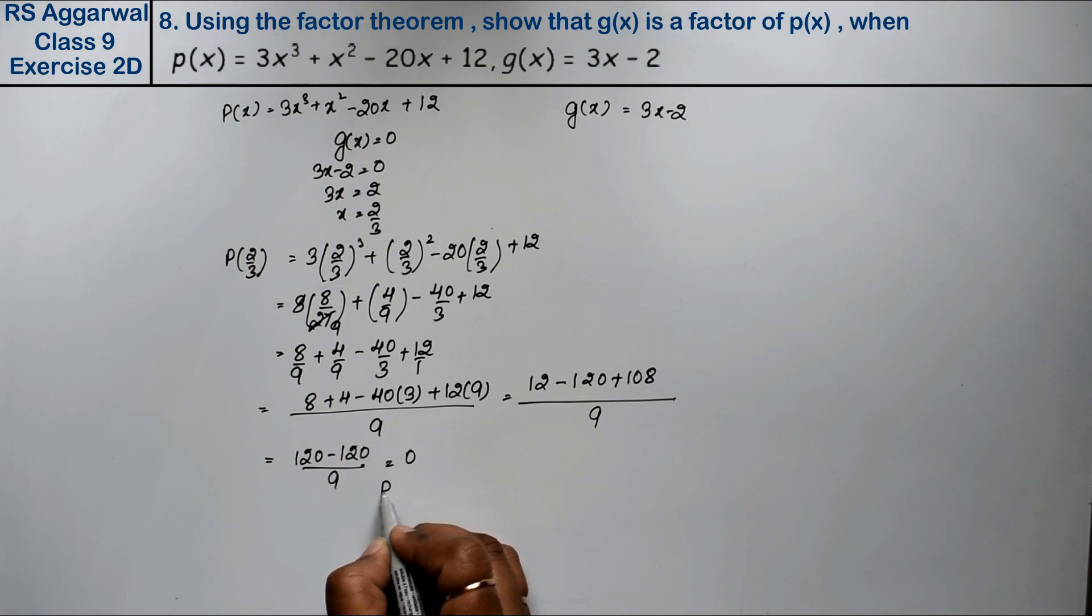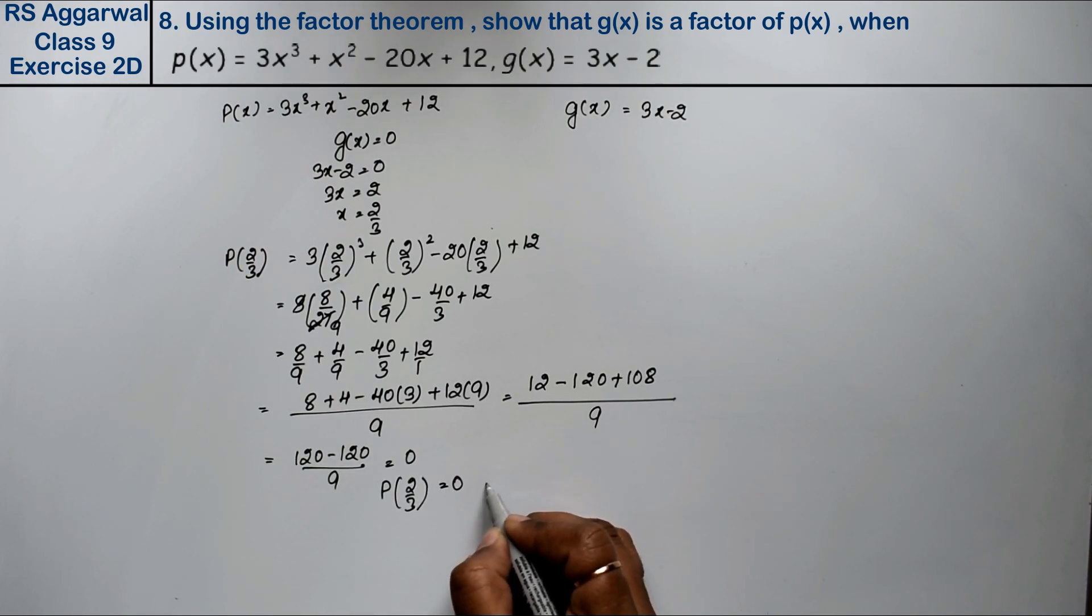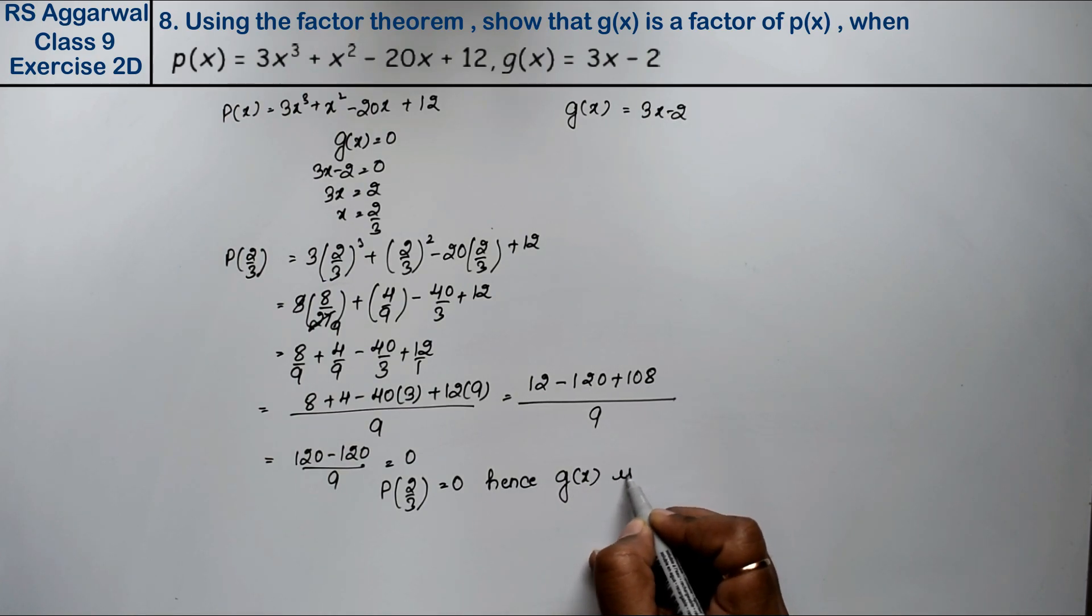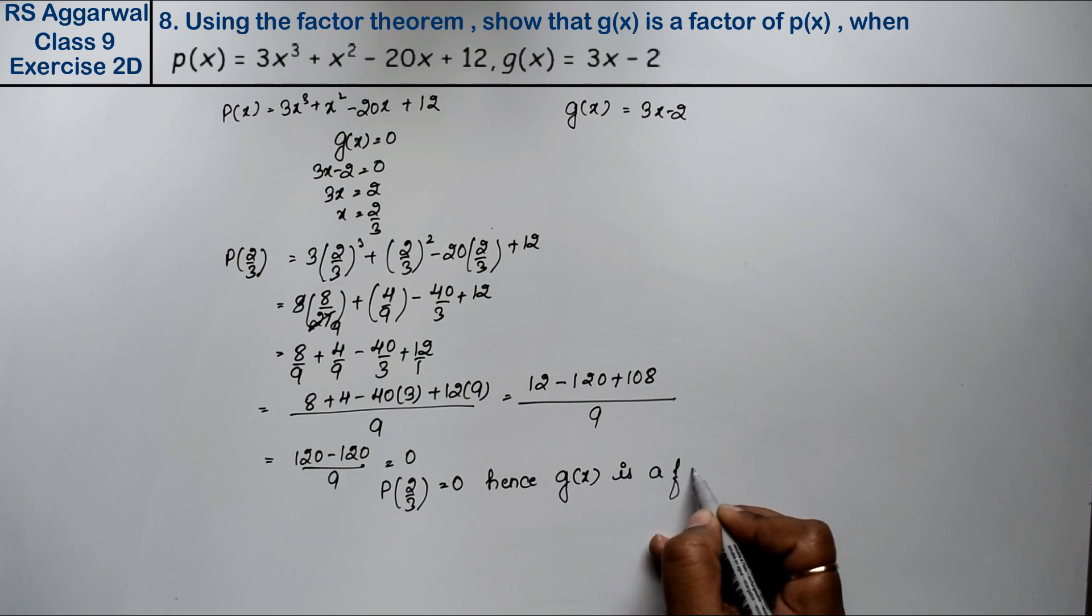Because p(2/3) = 0, hence g(x) is a factor of p(x).